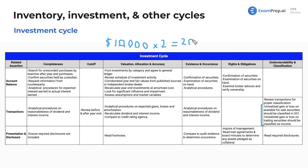$200 — that's what our interest income should be. Obviously, if it's for half the year, we would divide by two. So something to take into account.